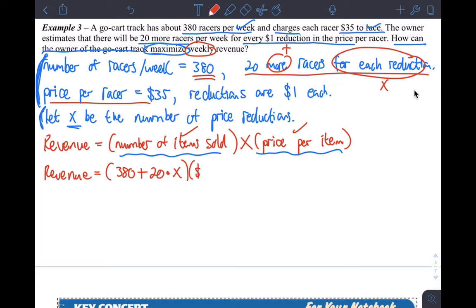So price per racer, $35. So times $35. And reduction means reduce, which means basically minus. Subtract something from the original price per racer. So minus, and I'm reducing the price by $1 at a time. So $1 reduction times each, which means times X. Each price reduction. So X is still the number of price reductions. And so that's the equation.